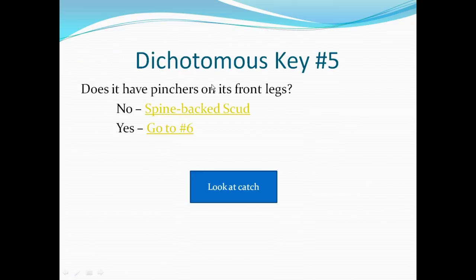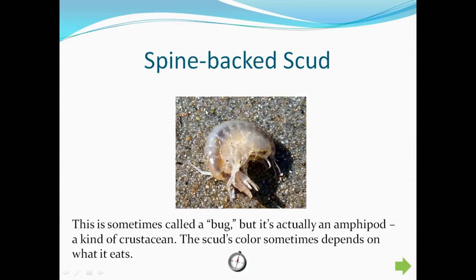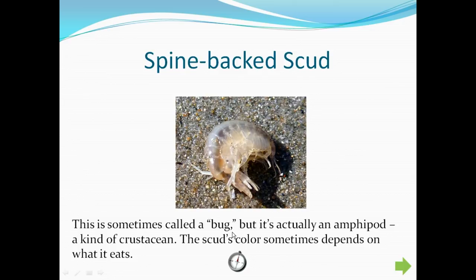Does it have pinchers on its front legs? No, it doesn't. So we click No, and it takes us to the Spine Back Scud page. It's got the name at the top, our organism in the middle, and a couple of facts at the bottom. So there you have it — that's how you use a dichotomous key.